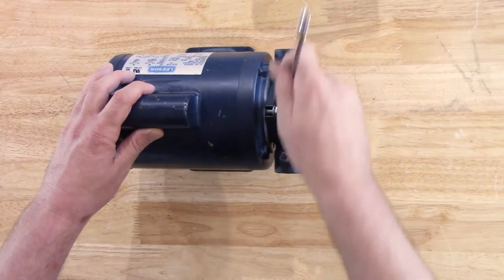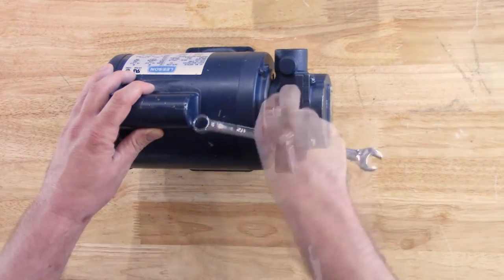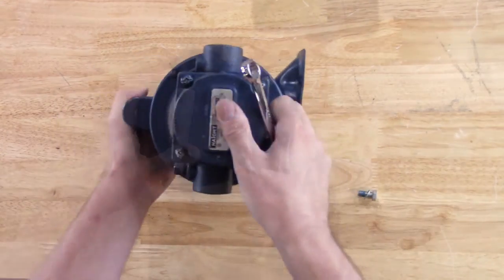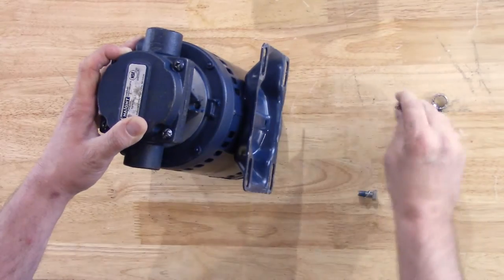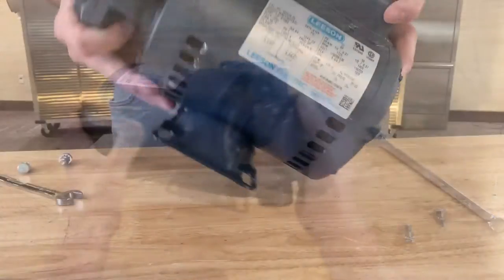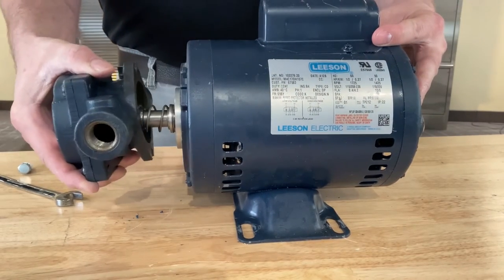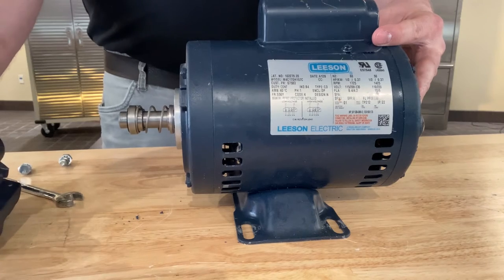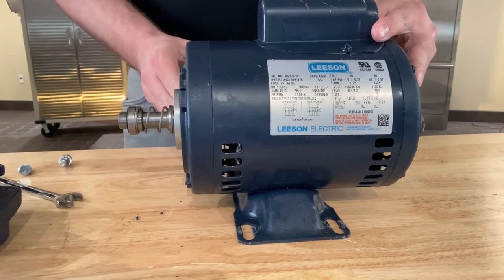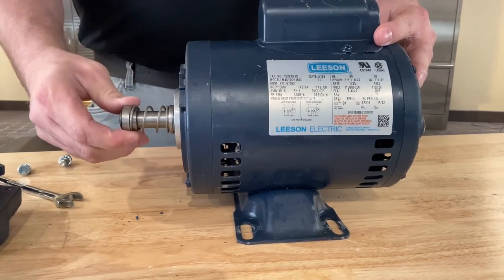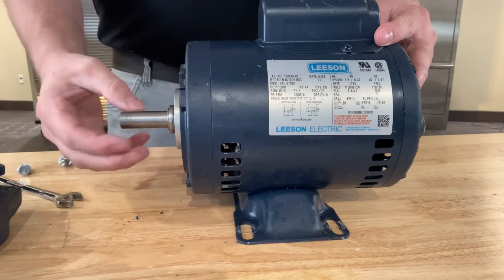To replace the seal kit, start by removing the two flange bolts that mount the pump to the motor. Now that the two bolts are removed, we can remove the pump body from the motor and expose our seal components. Once we have them separated, we can remove these seal components and set them to the side.